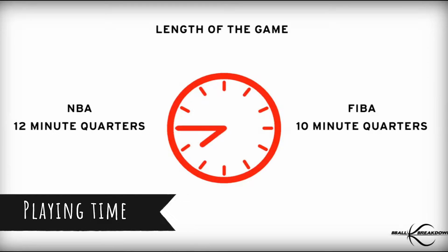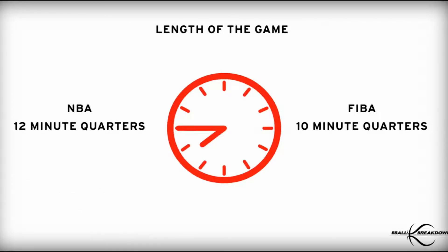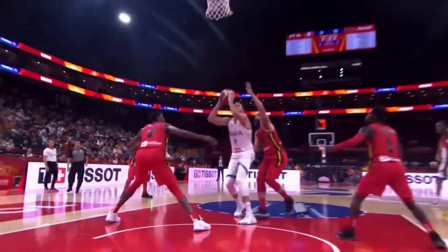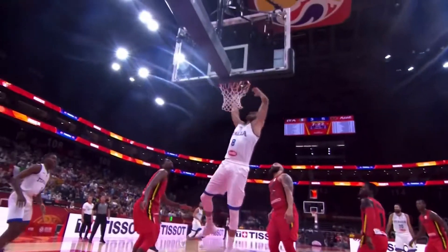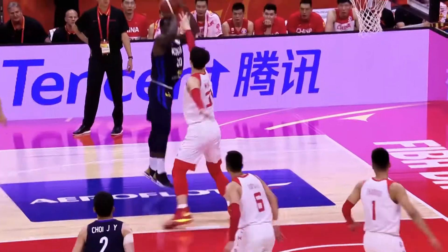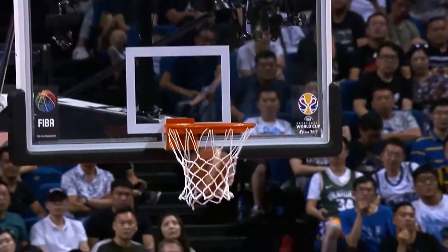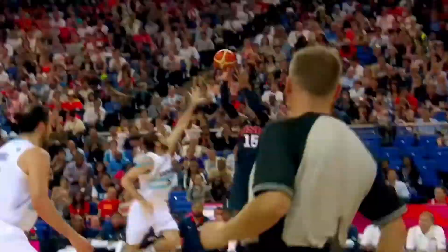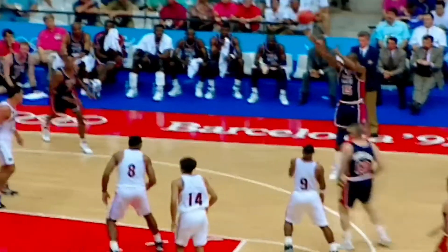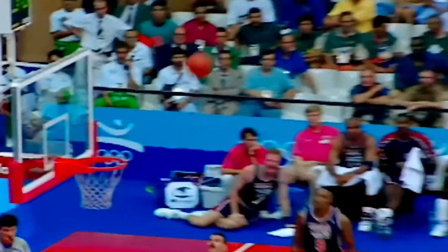Playing time: FIBA uses four 10-minute quarters in international competition. NBA quarters are 12 minutes long, resulting in a shorter game overall during the Olympics. In terms of overtime, the two basketball governing bodies both employ five-minute intervals. The Olympics also use a 24-second shot clock, with each overtime period lasting five minutes.